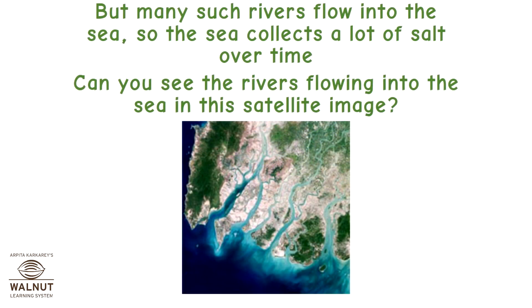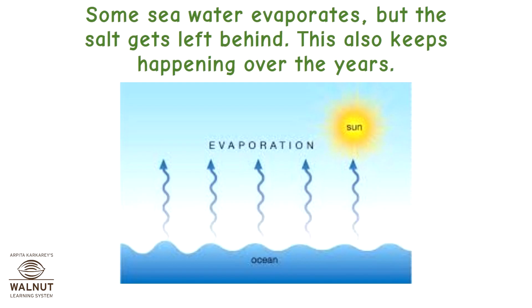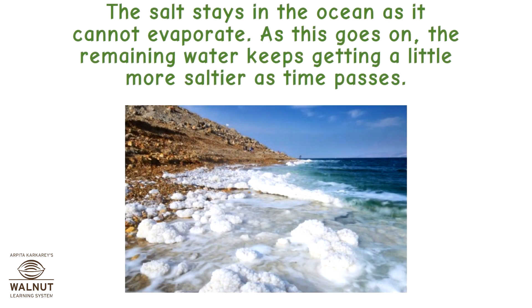But many such rivers flow into the sea, so the sea collects a lot of salt over time. Can you see the rivers flowing into the sea in this satellite image? Some sea water evaporates, but the salt gets left behind. This keeps happening over the years — the salt stays in the ocean as it cannot evaporate, so the remaining water keeps getting a little more salty as time passes.